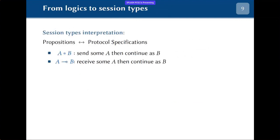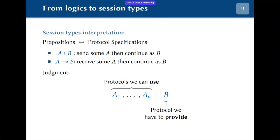We'll get back to what this means in terms of typing, but first we need to understand how we are going to interpret propositions in terms of protocol descriptions. I propose this analogy: the conjunction of A and B will represent a protocol that expects the send of some A and then continues as protocol B. The arrow type A implies B will represent a receive of some A and then a continuation as B. When we have a judgment with hypotheses and a conclusion, the hypotheses represent protocols we can use and the conclusion is the protocol we have to provide.